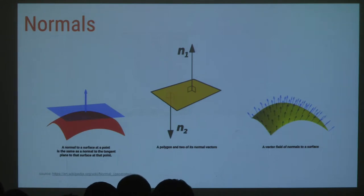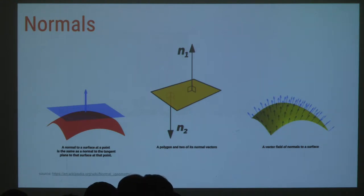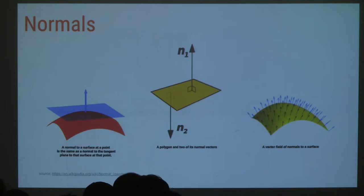That leads us to normals — another concept we need to understand. A normal allows us to calculate angles between our light source and our surfaces. It's a vector that points perpendicularly outward from our surface. It's a normalized vector — normalized because we're only interested in calculating angle differences, so you only need a vector of size one.